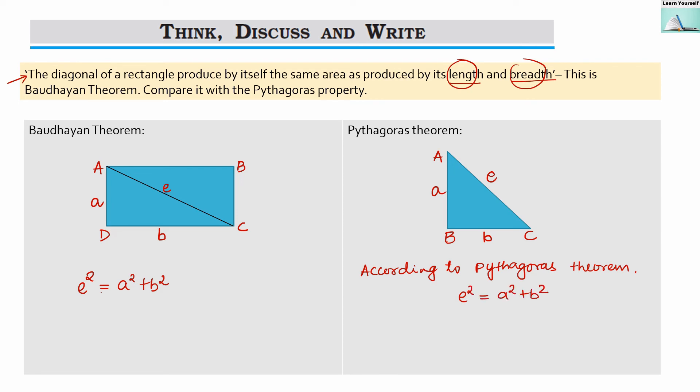So here we can see that Baudhayan theorem and Pythagoras theorems are same, but the Baudhayan theorem is with respect to rectangle, whereas Pythagoras theorem is with respect to right angle triangle.